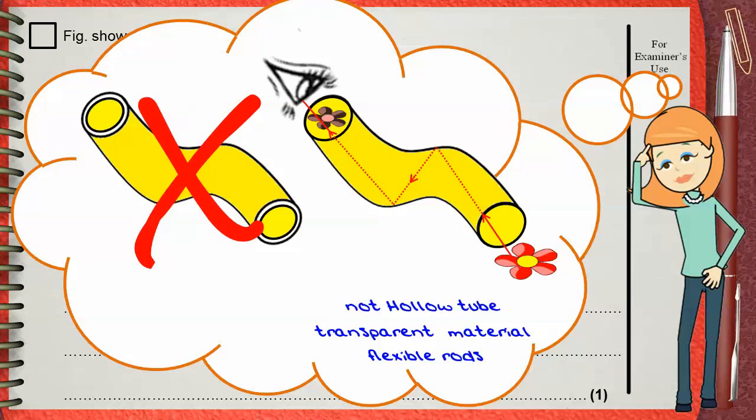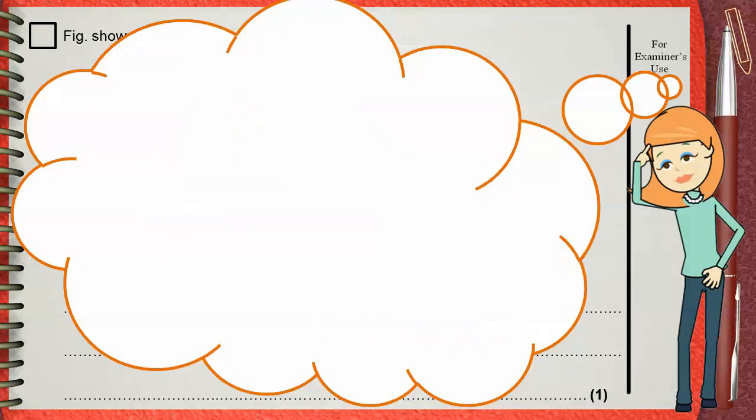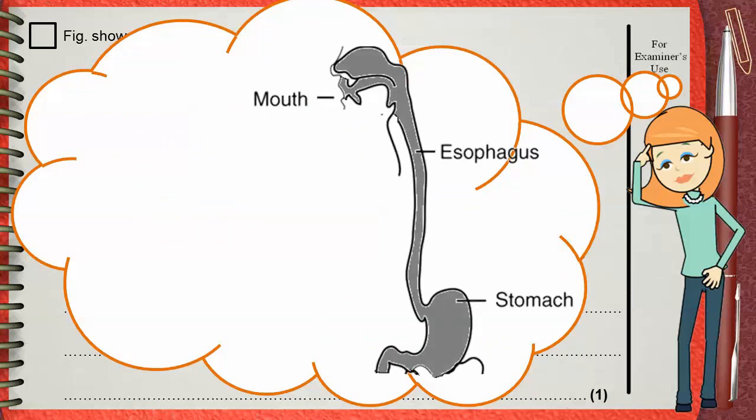One of the important uses of optical fiber is examining the inside of the stomach. This is part of the digestive system, including mouth, esophagus, and the stomach. The specialist can insert an optical fiber that goes through the esophagus to the stomach.